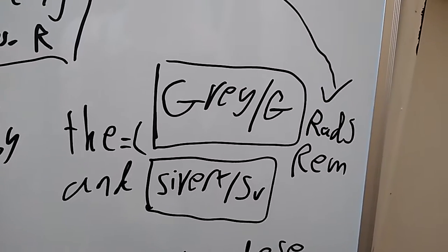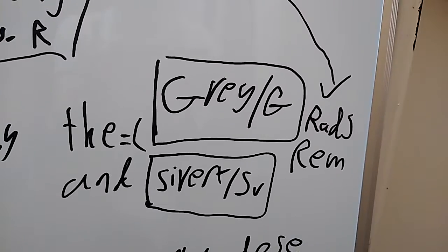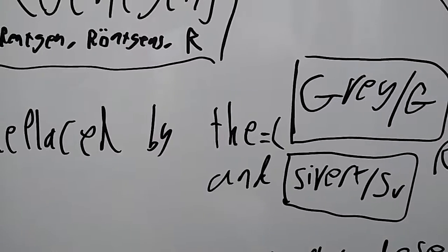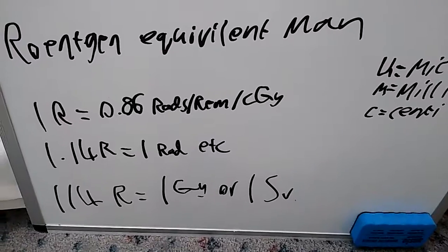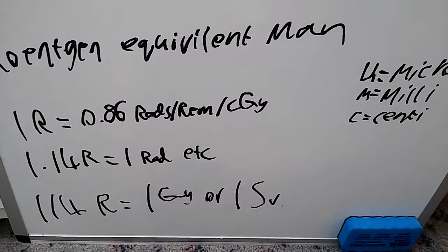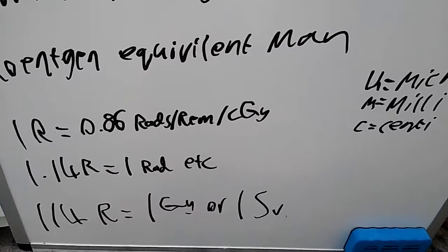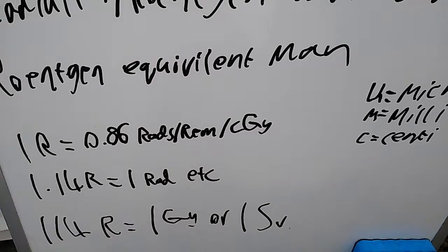So, Roentgens and Röntgens obviously they keep the Röntgens sort of word in them, but one Roentgen and one Röntgen is exactly equal to one Centigray. So basically there's 114 Röntgens in one Centigray or one Sievert, because they're massive units.